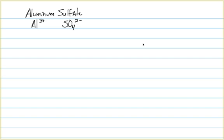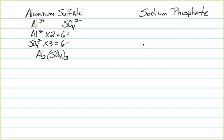Next, aluminum sulfate: aluminum has a three-plus oxidation state; sulfate, another polyatomic ion, has a two-minus. Since they are unequal in charge, we need to find a common multiple of six — we take aluminum times two and sulfate times three to give us both sixes. We end up with Al₂(SO₄)₃. Since we have more than one sulfate, we put it in parentheses with the three outside to the lower right.